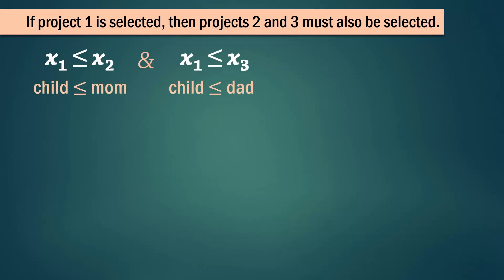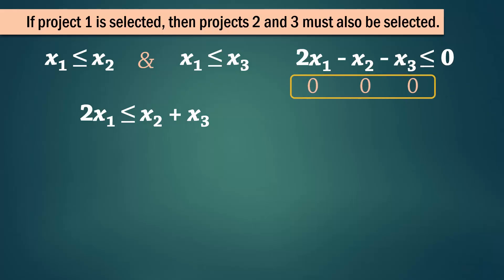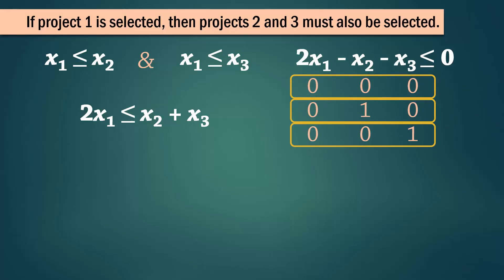We can combine them to give 2x1 ≤ x2 + x3, or equivalently 2x1 − x2 − x3 ≤ 0. That is, we can decide to have none of them, we can have only project 2, or only project 3.